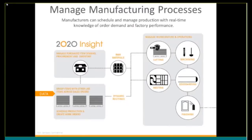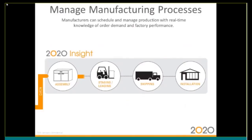Additionally, with 2020 Insight, manufacturers can schedule and manage production with real-time knowledge of order demand and factory performance from cutting and machining, nesting and edge banding, through finishing. 2020 Insight closes the loop by providing manufacturers with an ability to schedule and manage production with real-time knowledge of order demand and factory performance, including assembly, staging and loading, shipping, and even on-site installation management.